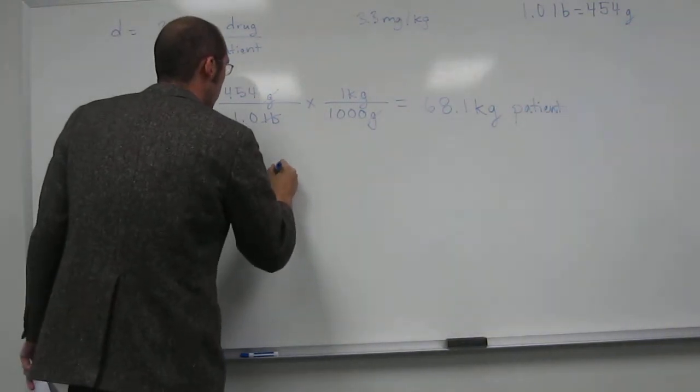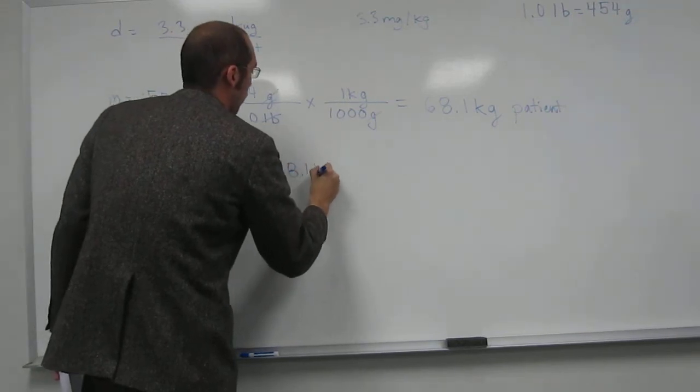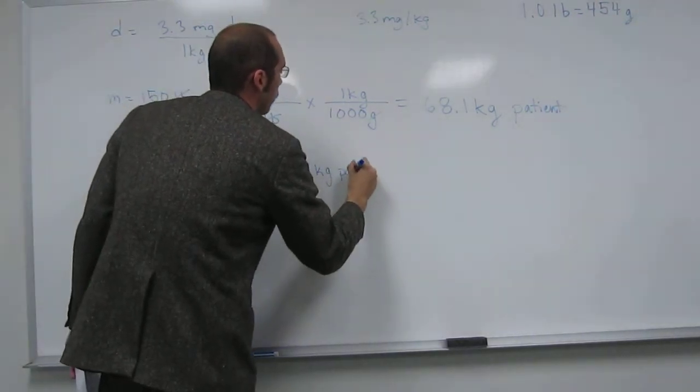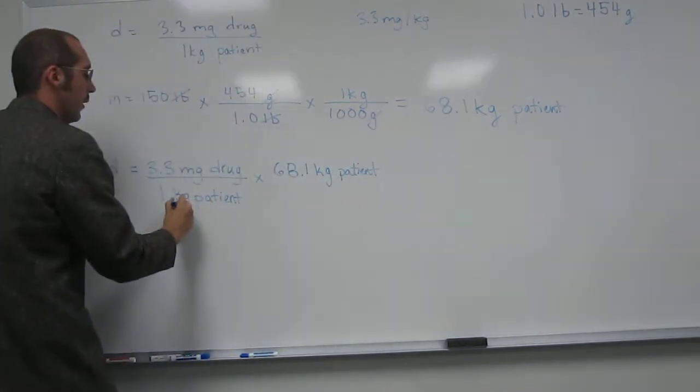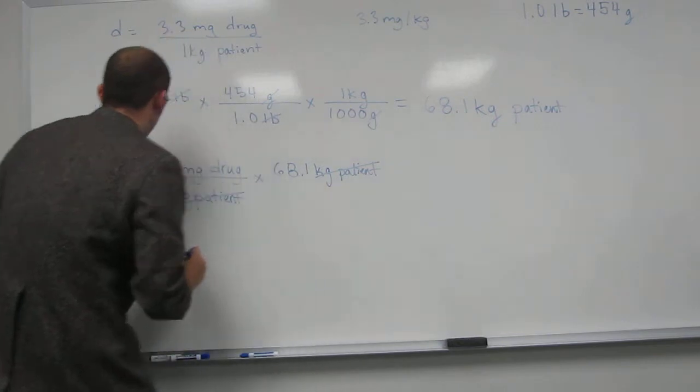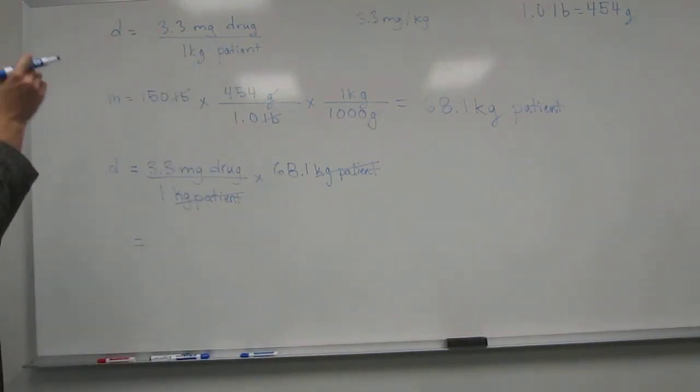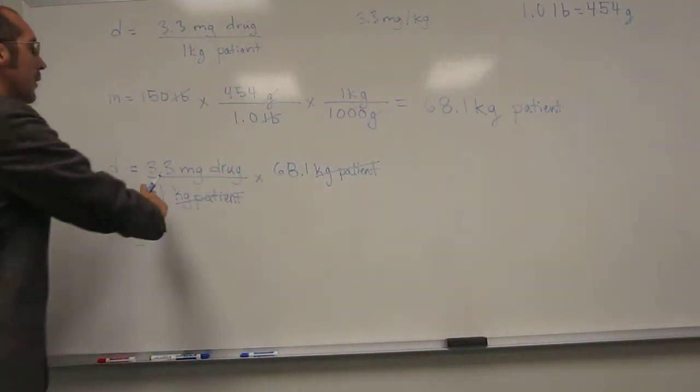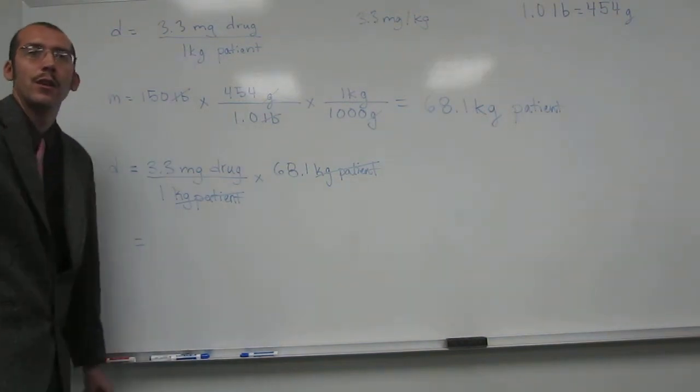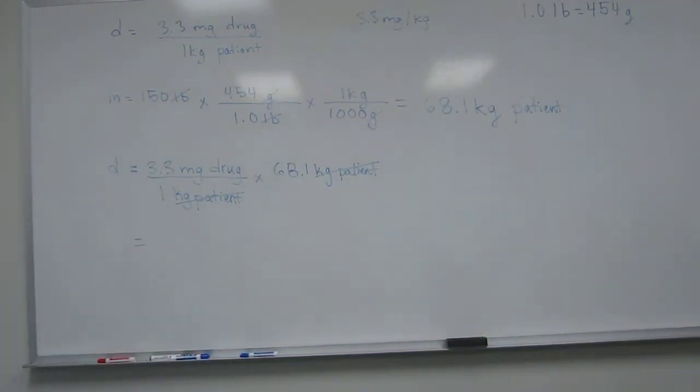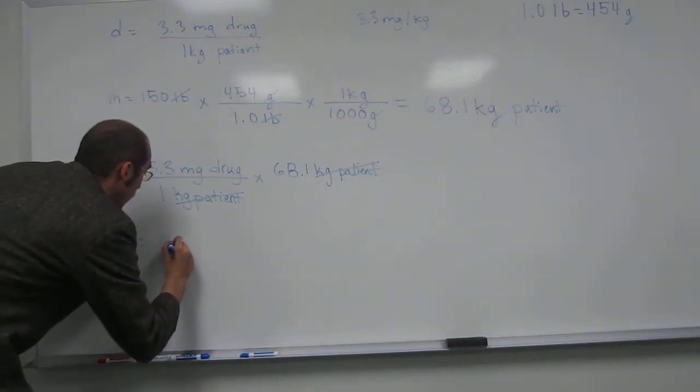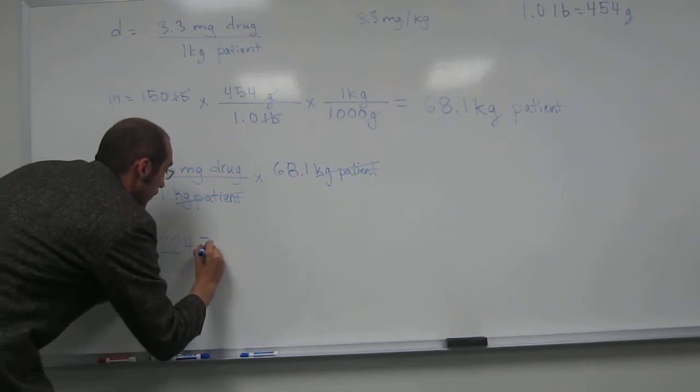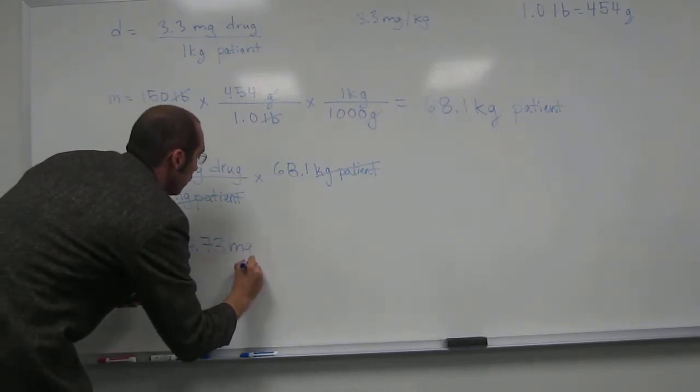So, we multiply that by, of course, 68.1 kilograms of patient. And, notice, kilograms of patient cancels out. And, again, here, you should take it to as many sig figs as you can. Your final answer is going to be the correct number of sig figs. So, we just take this 68.1 and multiply it by 3.3 and we get this number 224.73 milligrams of the drug.